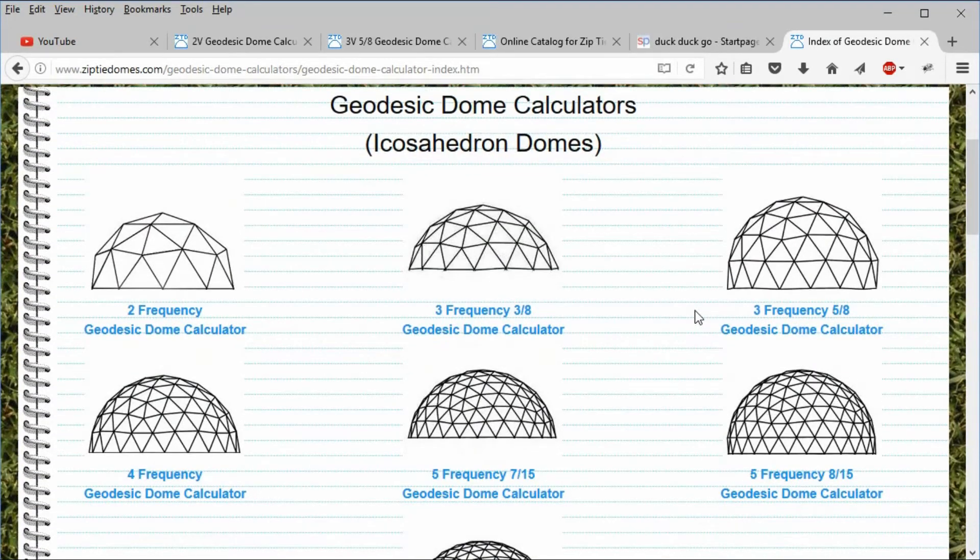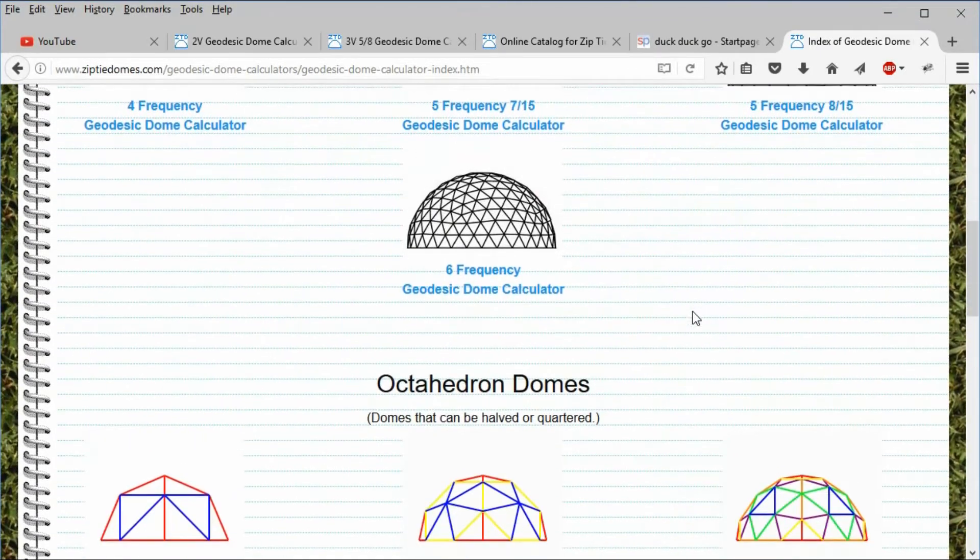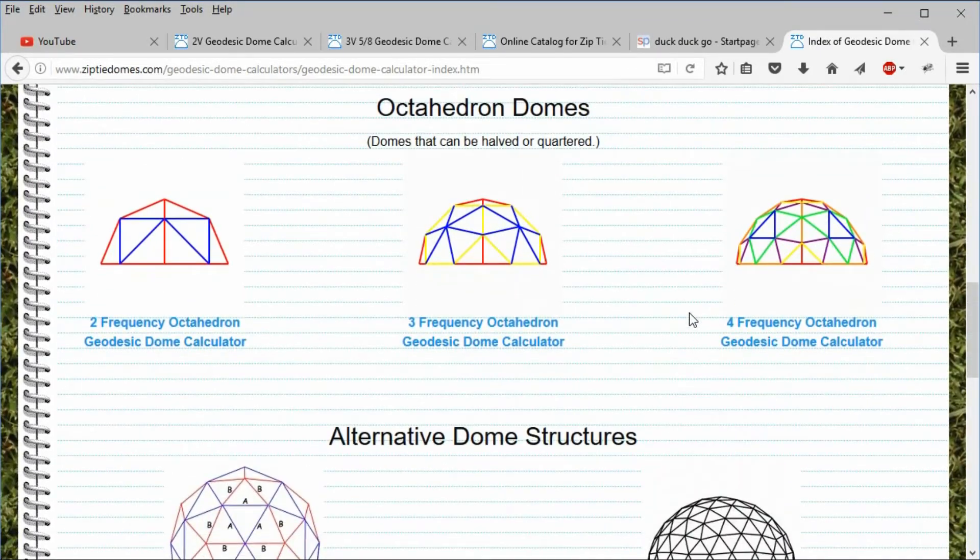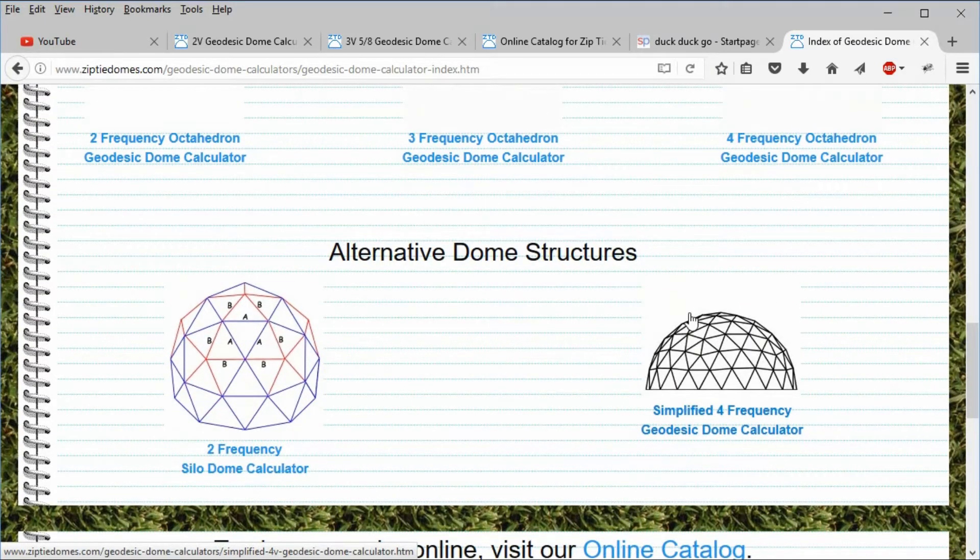The first section has icons that link to the calculators that are derived from the icosahedron. The second section links to our octahedron dome calculators and our alternative dome structures, such as a silo dome calculator.